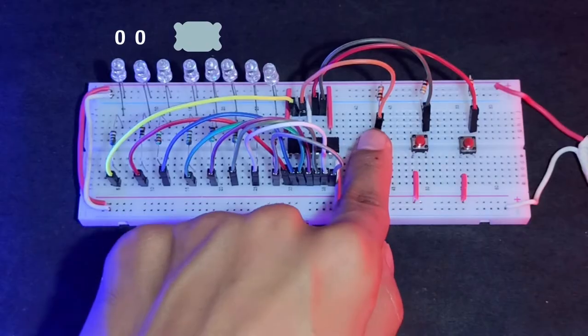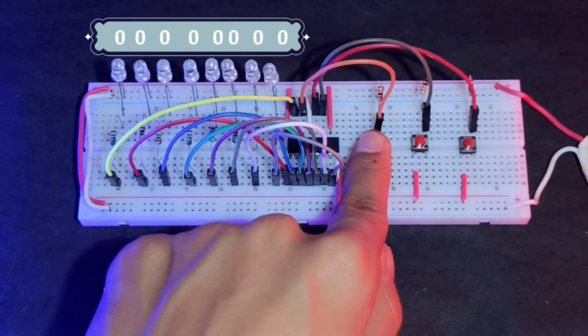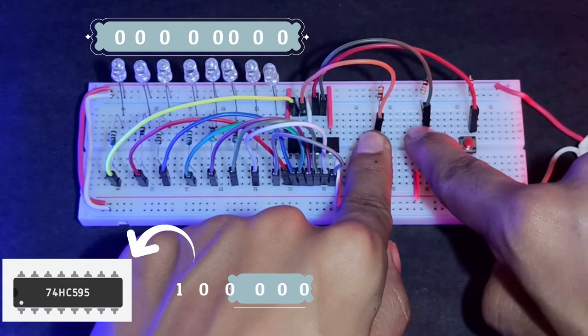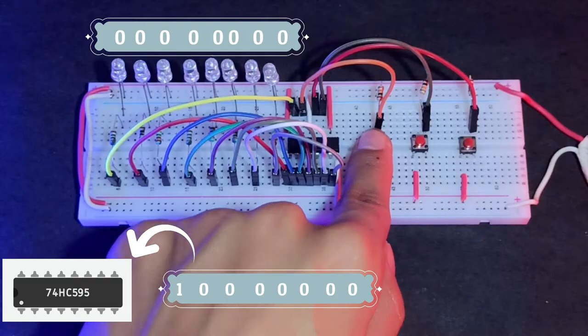When I hold the data button, now we are receiving bits, but it's not stored yet in the chip register. So we have to press the clock button. Then the signal goes high to low and the bits are stored in the chip register.